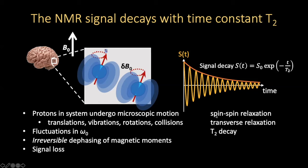This sort of relaxation is referred to as spin-spin relaxation because it's the loss of phase coherence due to one spin acting on another. It's also referred to as transverse relaxation since it's what we measure in the transverse plane orthogonal to B0, or T2 decay, or T2 relaxation, or any combination of those terms.